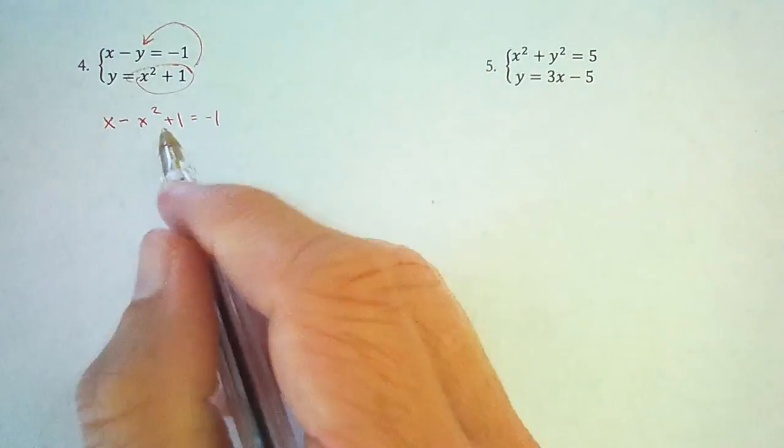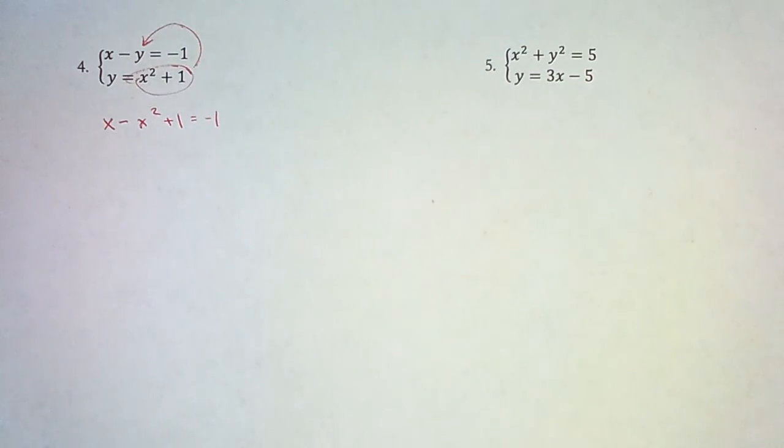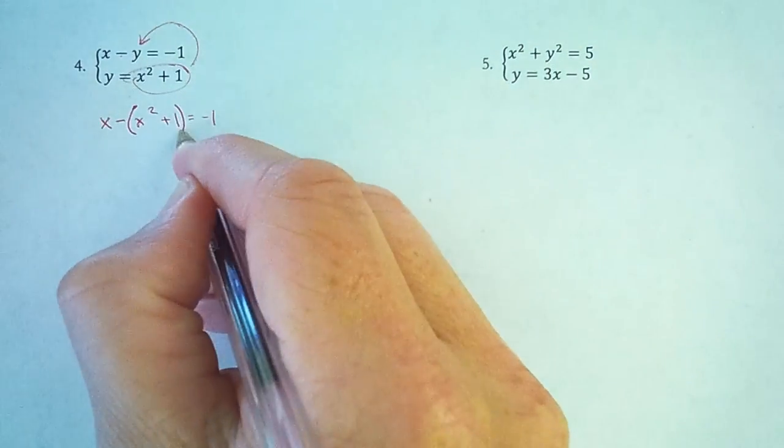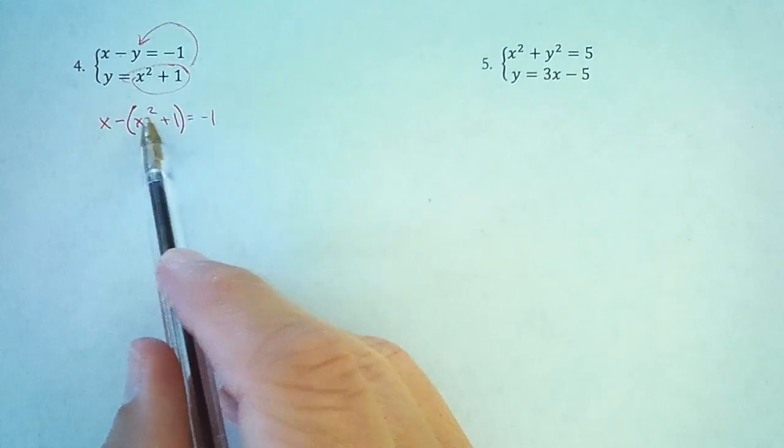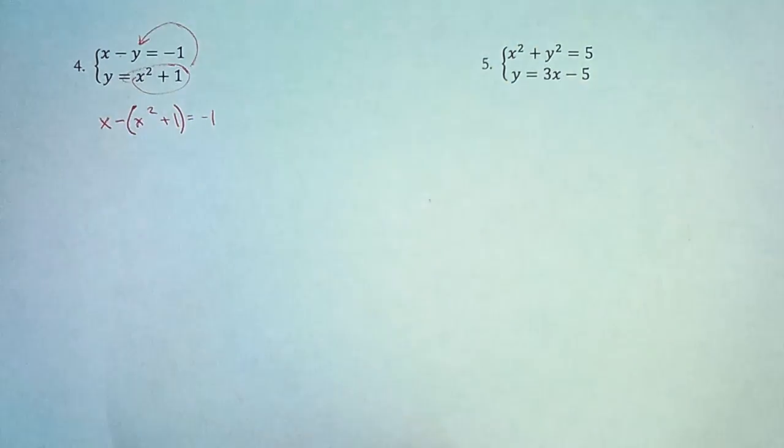Now when I have an x and an x squared, actually before I go on, I should point out this is minus y, so it should be minus and then all of this in parentheses, so that x squared plus 1 is all being subtracted. I absolutely need that in parentheses.